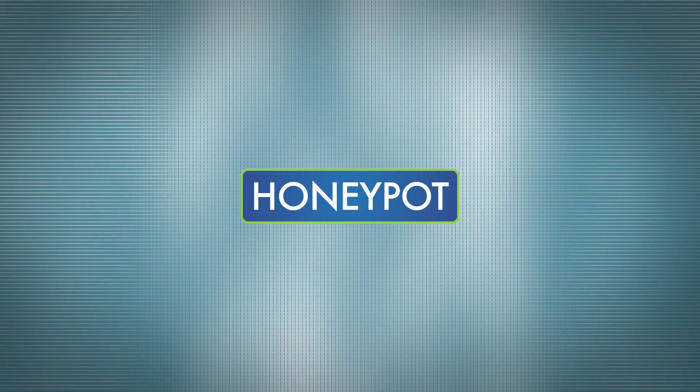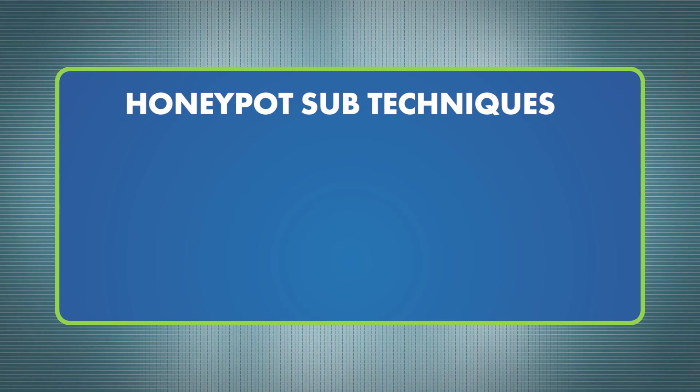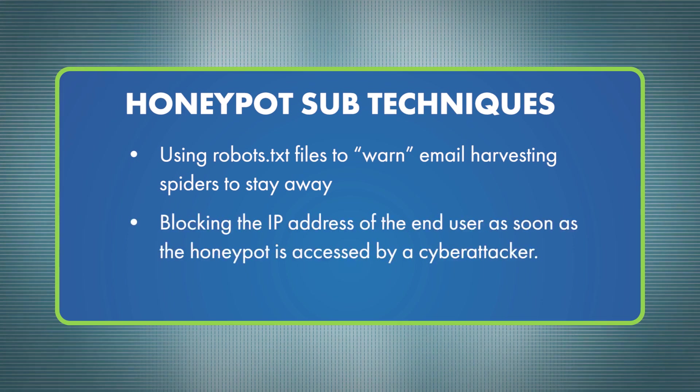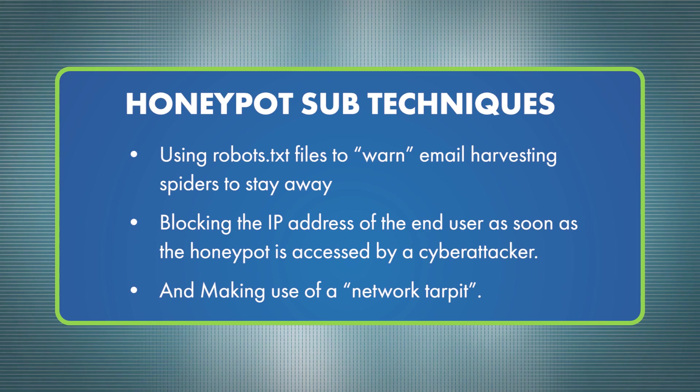In cybersecurity, a honeypot is a security device intended to detect, divert, or counteract the unauthorized use of information systems. A honeypot uses various sub-techniques including using robots.txt files to warn email harvesting spiders to stay away, blocking IP addresses of the end user as soon as the honeypot is accessed by a cyber attacker, and making use of a network tar pit. A tar pit is a specialized trap designed to exhaust the time and resources of email harvesting spiders by feeding them useless information and data.